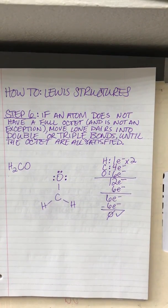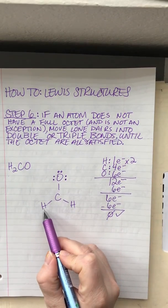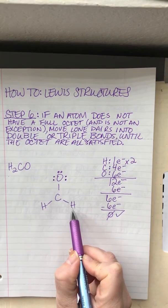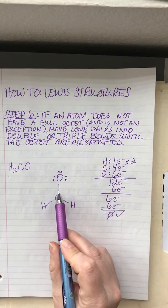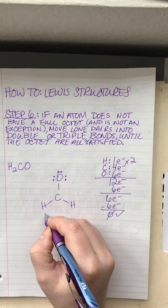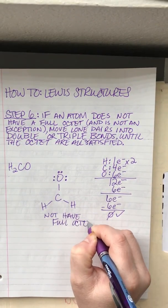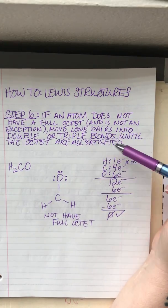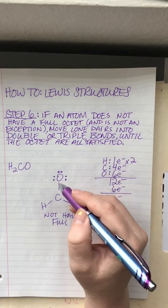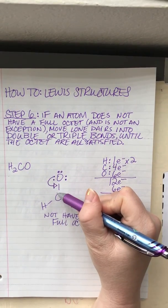We have an electronically correct structure, so now we need to check the octet rule. Hydrogen only needs two electrons — it has two. Oxygen needs eight to have a full octet. But carbon here only has six, so carbon does not have a full octet. When you don't have a satisfied octet on one of the atoms but you've used all the electrons, you want to start moving lone pairs into double or triple bonds. So we move this pair of electrons that oxygen is holding over into a double bond with carbon.